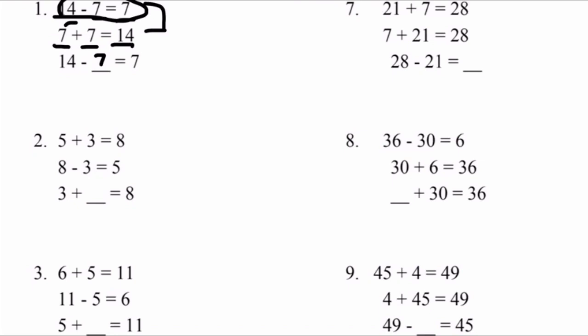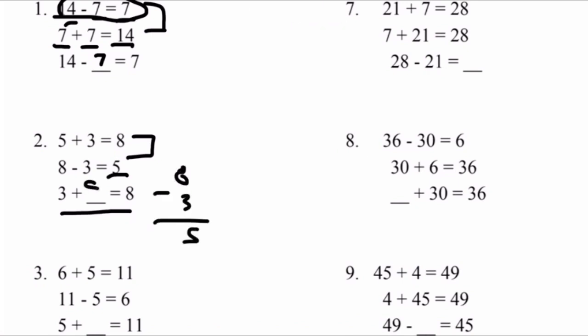Number two: 5 plus 3 equals 8. 8 minus 3 equals 5. Like I said before, these two equations have a correlation. 5 plus 3 adds up to 8, and 8 take away 3 equals 5. 3 plus what equals 8? They all have a relationship, and in order to figure out our last equation, we can subtract 3 from both sides to find our missing number.